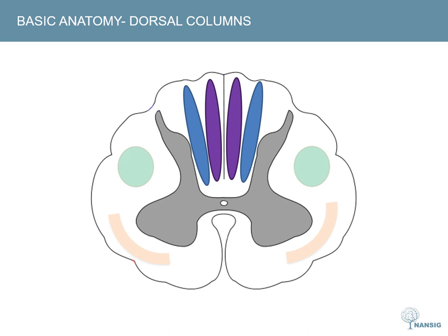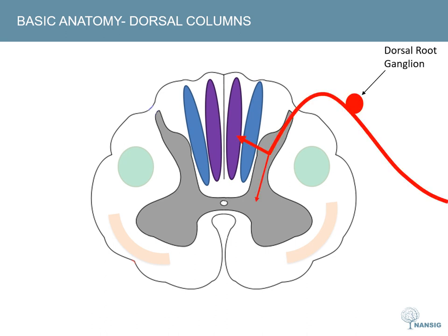Let's kick off by looking at the anatomy of the dorsal column medial lemniscus pathway. A fine touch, vibration, or proprioceptive stimulus results in the generation of an action potential in a peripheral neuron. That action potential is carried centrally via a large diameter myelinated axon that enters the cord dorsally. Most of those axons are then incorporated into the ipsilateral dorsal columns, whereas a smaller number move towards the central grey to synapse on interneurons and mediate reflex arcs.